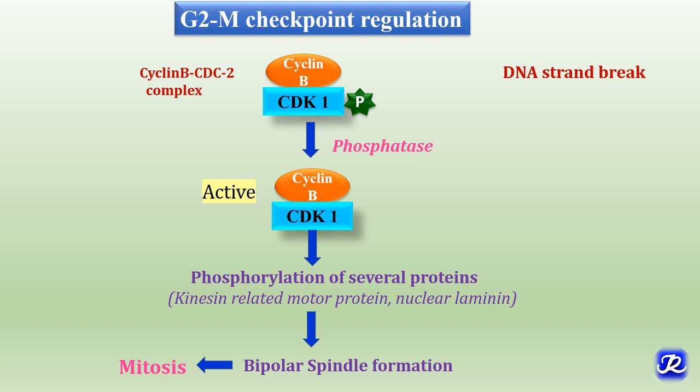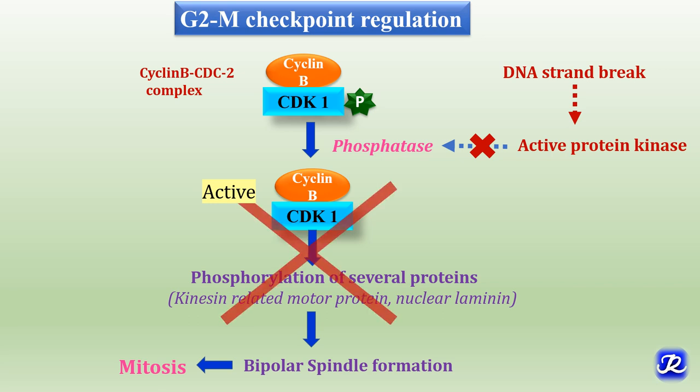If there is DNA damage, it results in activation of protein kinases which, through a series of reactions, ultimately leads to inactivation of phosphatase so that the cyclin B CDK2 complex cannot be activated and cannot phosphorylate the proteins involved in mitosis. This ultimately results in G2/M arrest.